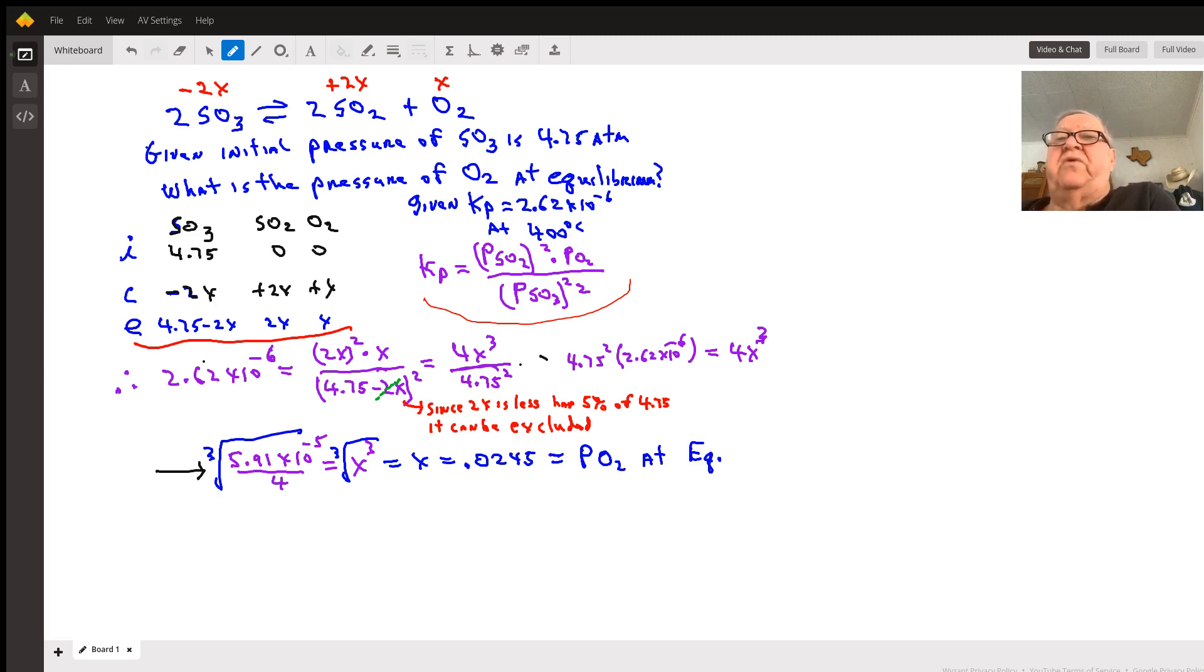At the final equilibrium, you're going to have 4.75 minus 2x of sulfur trioxide, 2x of sulfur dioxide, and just x of the oxygen gas. You plug that into the expression and set it equal to the K sub P given 2.62 times 10 to the minus 6.